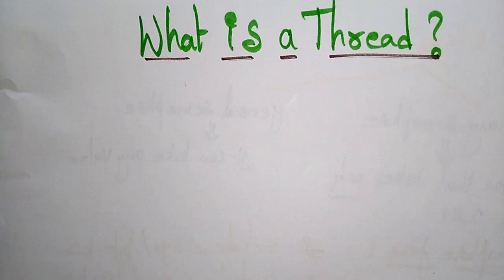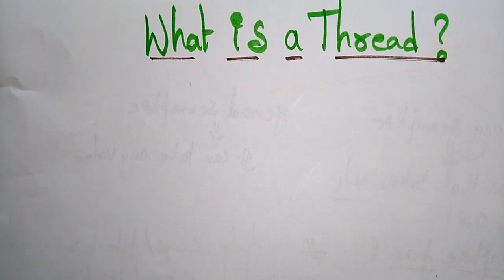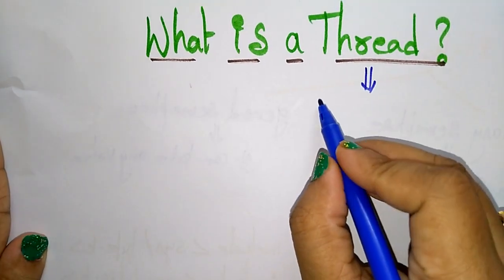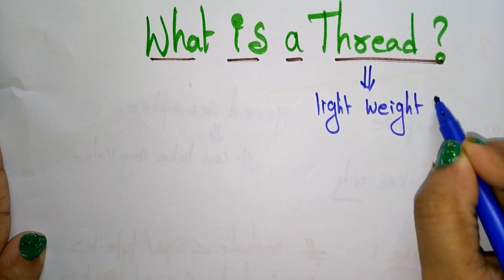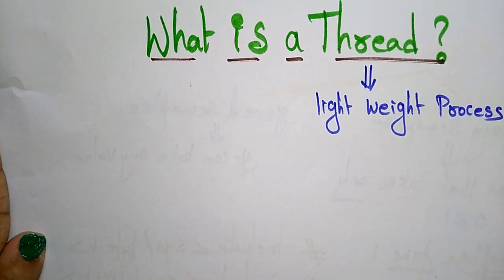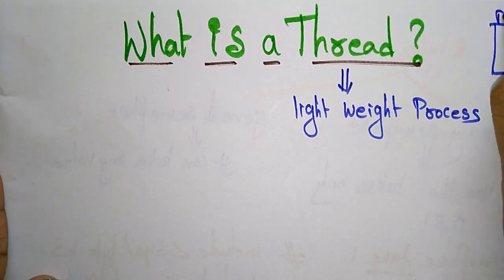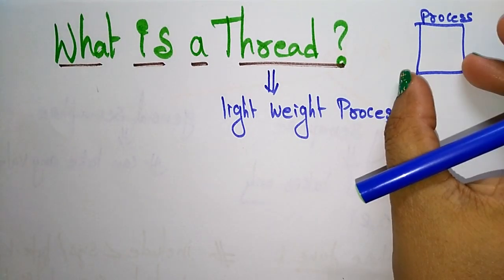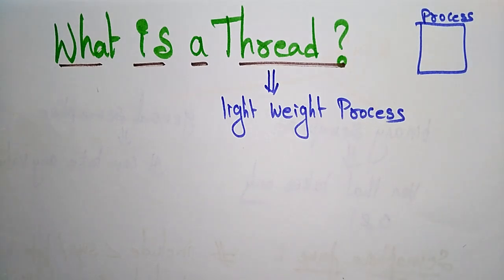Coming to the next topic: thread. What is a thread? There is often some confusion about processes and threads. A thread is nothing but a lightweight process. A process is a program that is going to be executed in memory — when the CPU executes a program, that is called a process. A process is the current execution of a program.